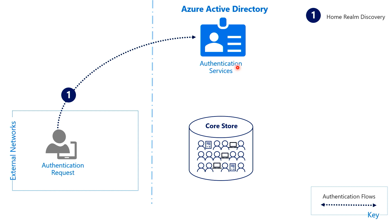So let's start with step number one. Kim here types her UPN — let's say it is kim@contoso.com — and submits the form to Azure AD. This step is what we call Home Realm Discovery, because it's how Azure AD discovers what tenant the user belongs to. With the UPN Kim typed in, the authentication service then queries the core store to find out how she should authenticate, in step number two. In this case, the core store will tell the authentication service that Kim is using the hash that's stored in the cloud. This is determined by the domain configuration — in this case, contoso.com — meaning all users in contoso.com will use PHS.